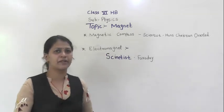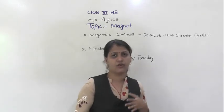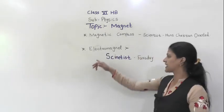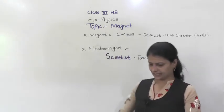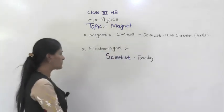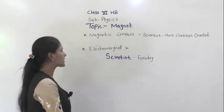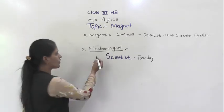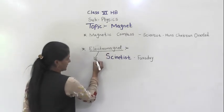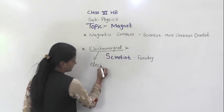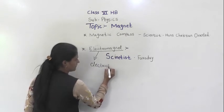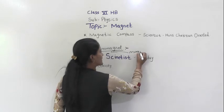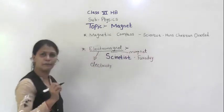The second application where we can use a magnet property is the electromagnet. The word itself tells you — it consists of 'electro', meaning electricity, and 'magnet'. It is the combination of electricity and the magnet.